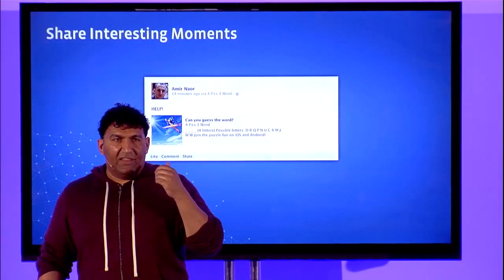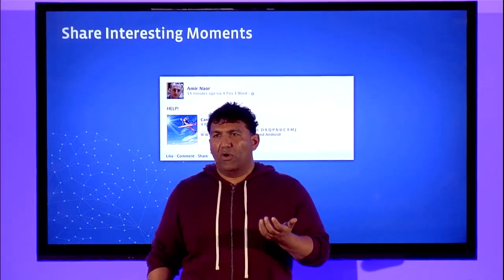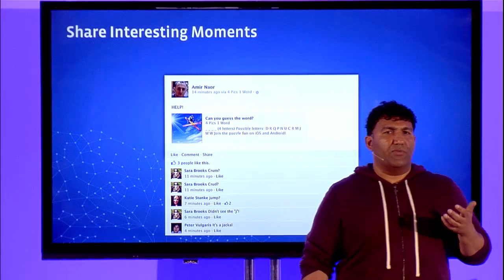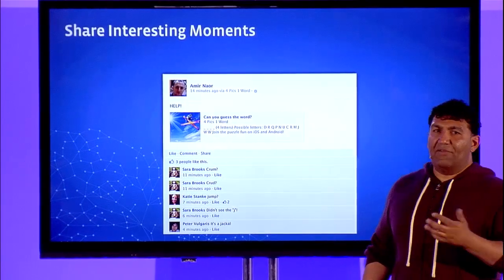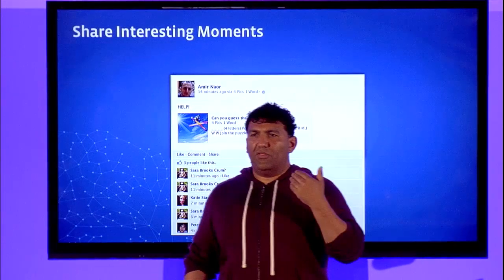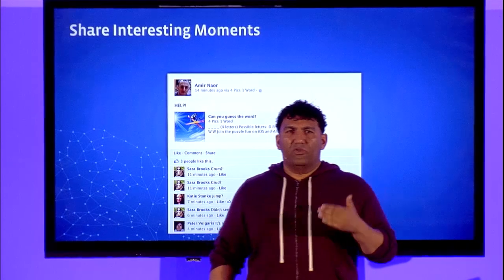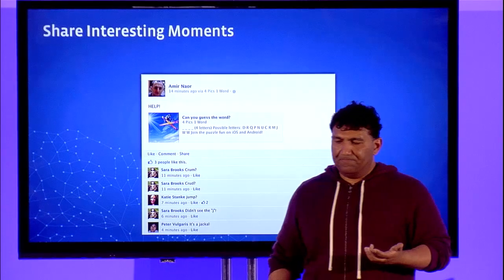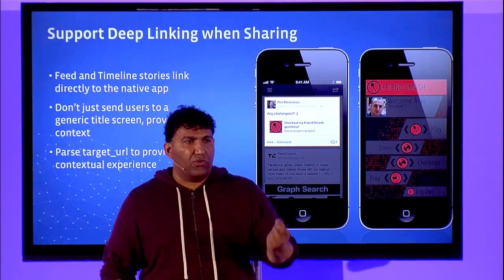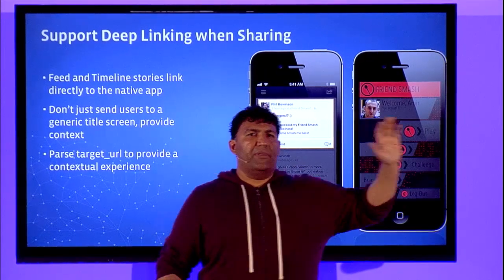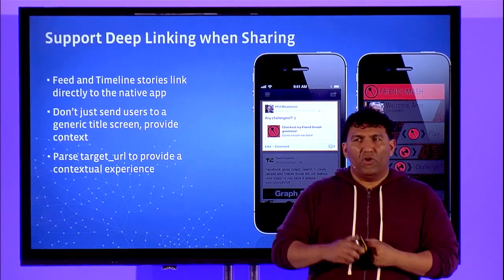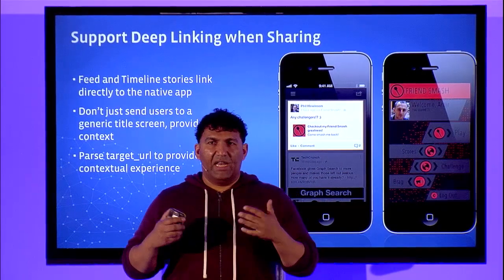A couple of pieces of advice: the biggest one is to share interesting moments from your game. Make sure the stories you share will result in a lot of engagement. Don't share random things from your game because people may get turned off. Share things people will be proud to have their friends see — things like achievements, or beating an expert-level player for the first time. These result in a lot of engagement which results in your app being discovered organically. Also, support deep linking when sharing to ensure people end up in the app store or directly in your game.